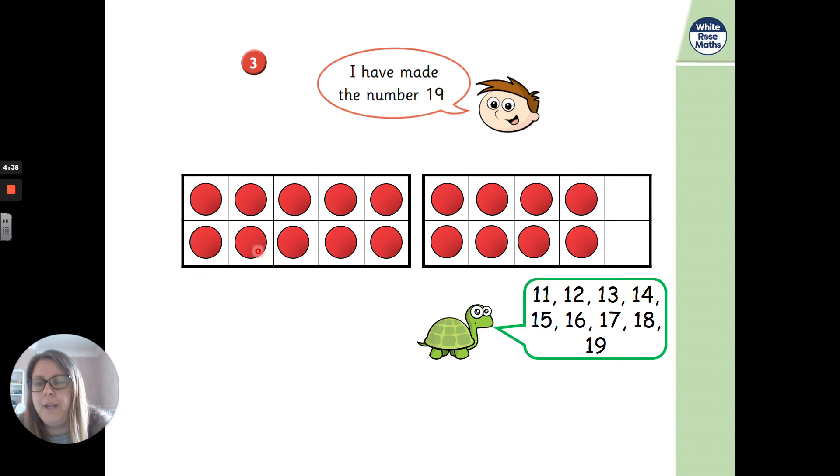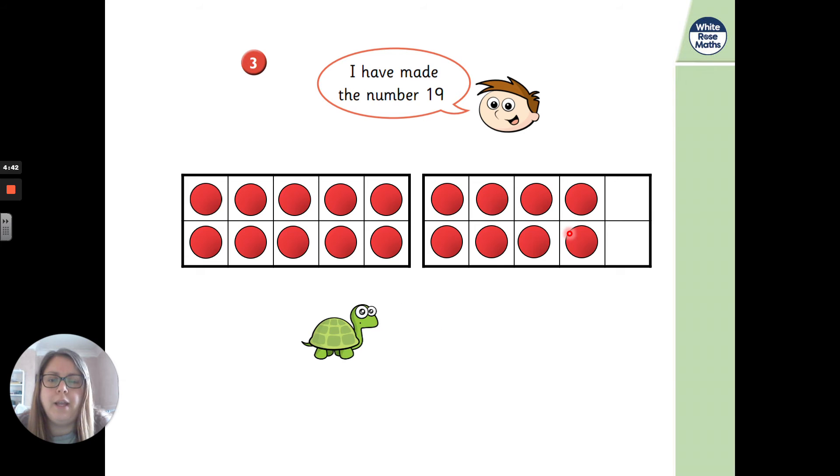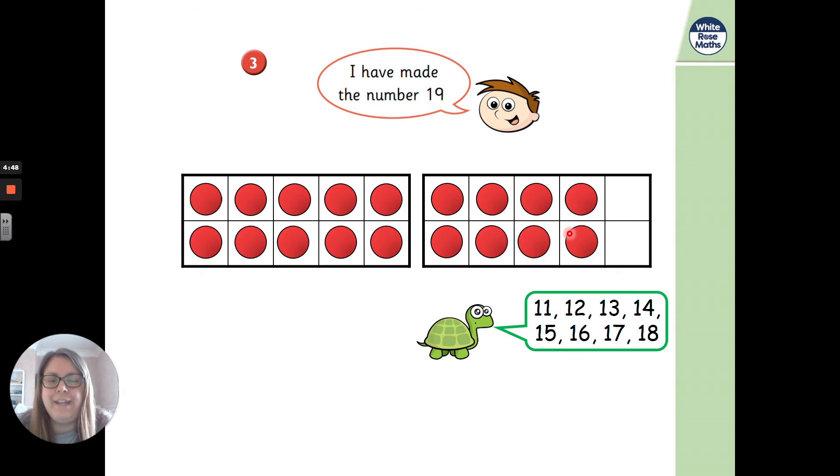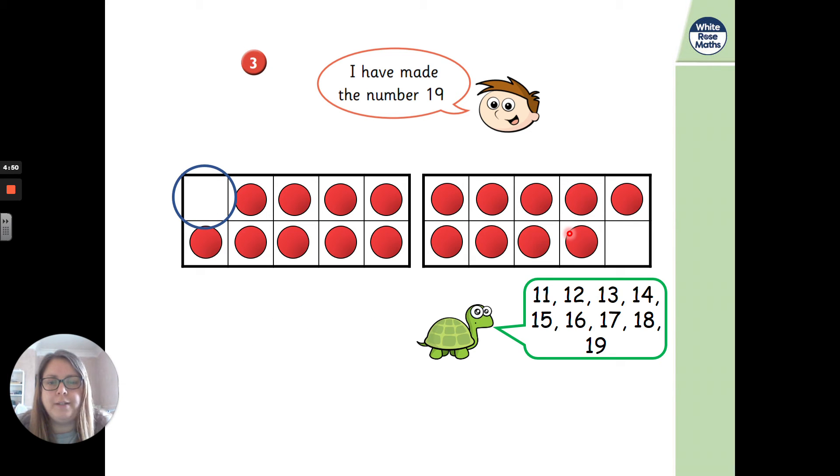So what he'd done is he'd not made up a full 10 to then make up. So actually, there is only, there's 10 now, because Tiny's moved it back. And then there's 18. So what he'd done, we'll go back to the beginning. Can you see how he'd not filled his full 10 frame up? So remember when we're making teen numbers, we need to make sure our full tens frame is filled up.